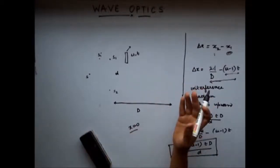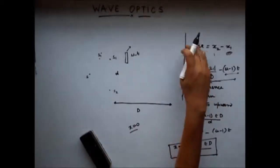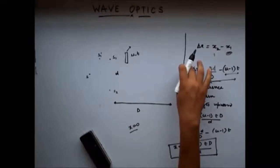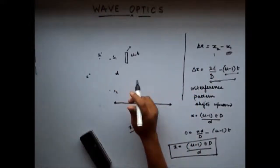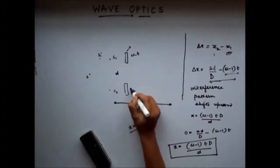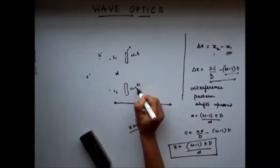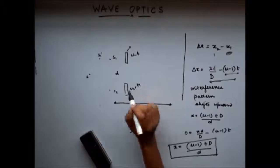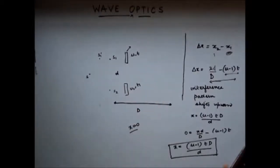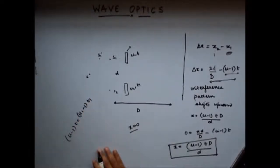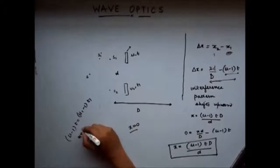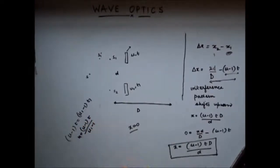To make the interference pattern shift back to its original position, we have to insert a glass slab with refractive index μ1 and thickness t1. We have seen that this should be the condition if we want to bring the interference pattern back. From this, we will get the thickness as μ1·t divided by (μ1 minus 1).